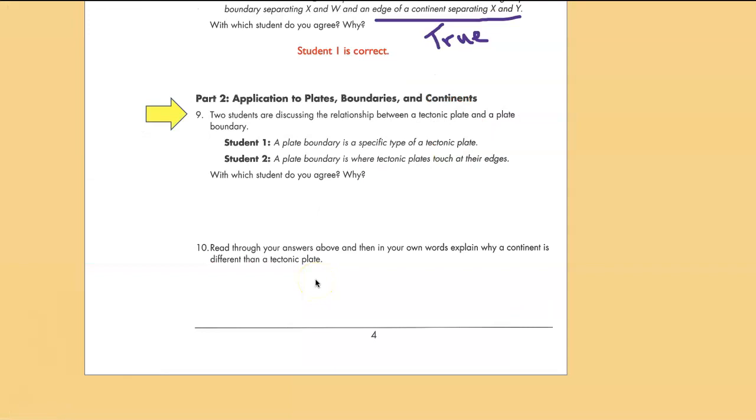Two students are discussing the relationship between tectonic plates and plate boundaries. Student two is correct that a plate boundary is not a plate, it's the edge of a plate. So I often ask students on a test: name two plates and name the plate boundaries separating them. For example, two plates might be the African plate and the South American plate, and the boundary separating them would be the mid-Atlantic ridge. Please make sure you understand the difference between a boundary and a plate.